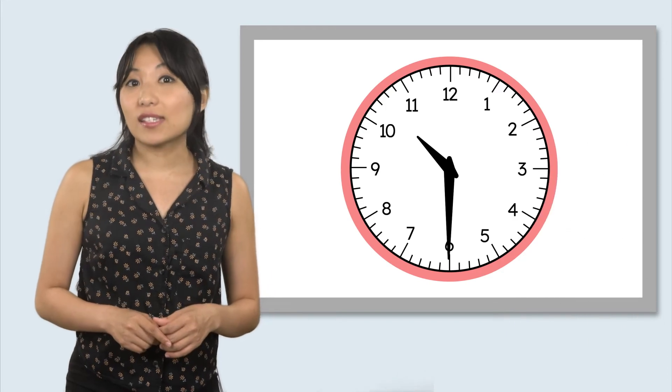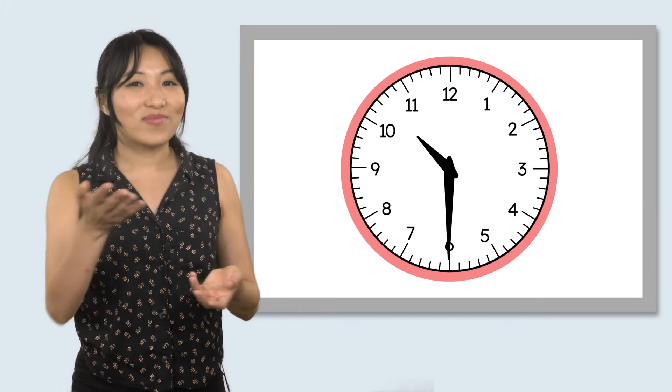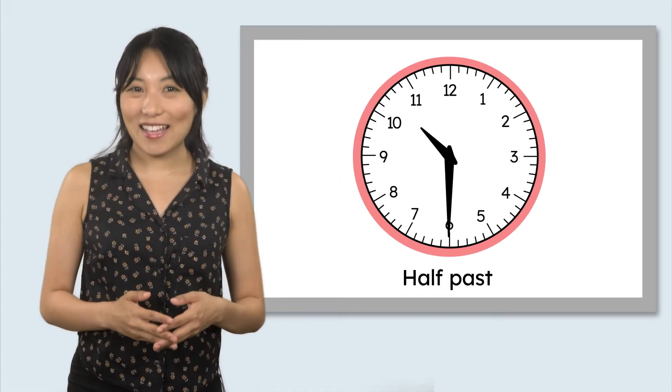Let's see if your guess was right. Mia moved it to the 6. When the minute hand is at the 6, half of the hour has passed. That's why we call it half past.